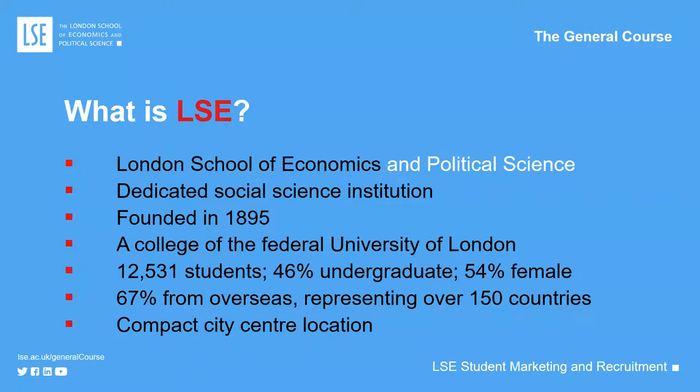LSE was founded in 1895 — not terribly old but fairly well established. It was founded by a group called the Fabians; the Fabian Society is still around today. When we were founded, our original founders wanted to create an institution for the betterment of society — to create people who would go out into the world and make it a better place.